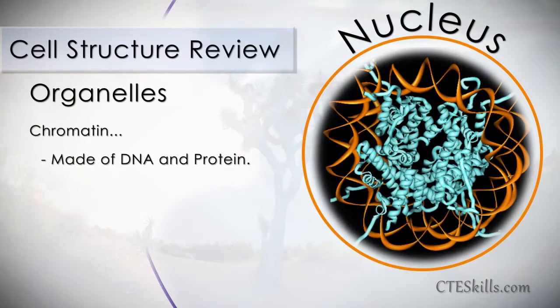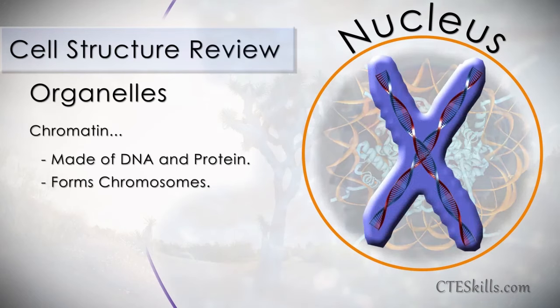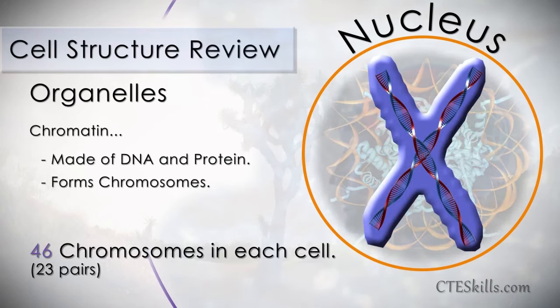Prior to the actual cell division, the nucleus has commanded the chromatin material, or DNA, to condense and organize itself into chromosomes, 46 of them to be exact.